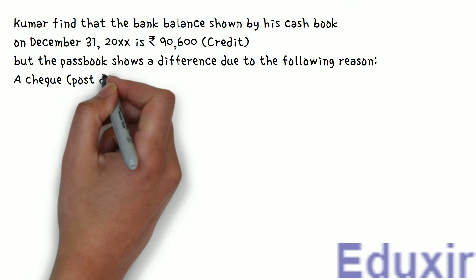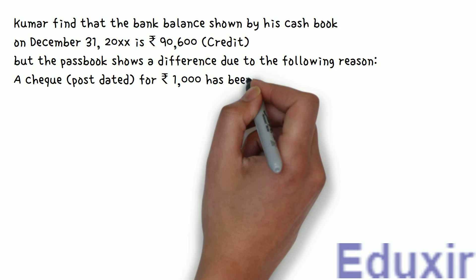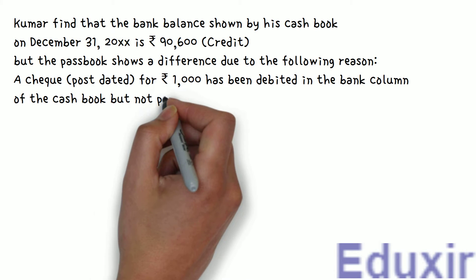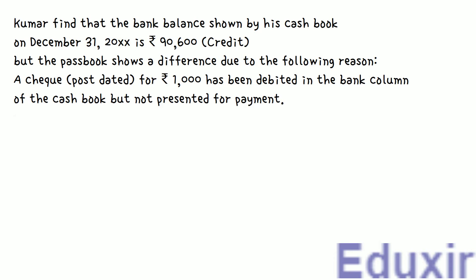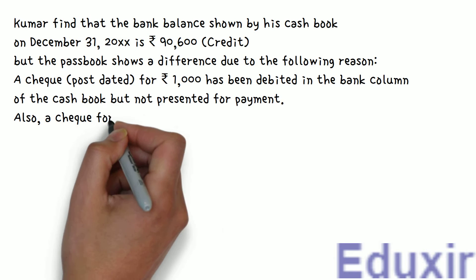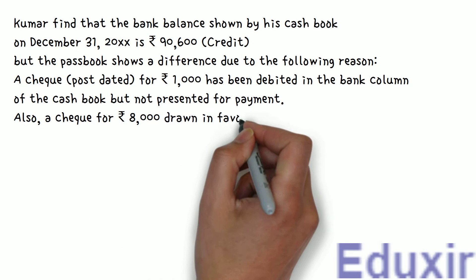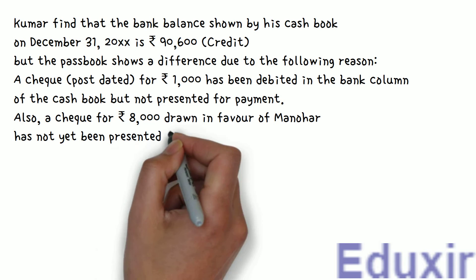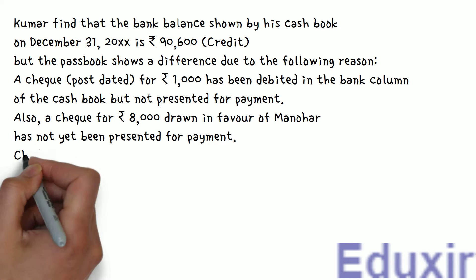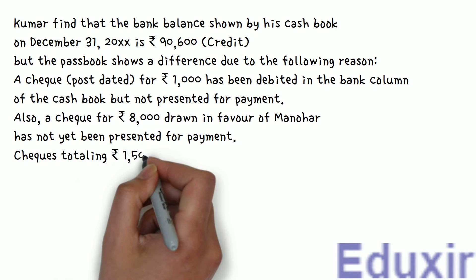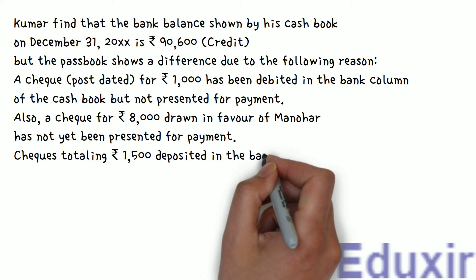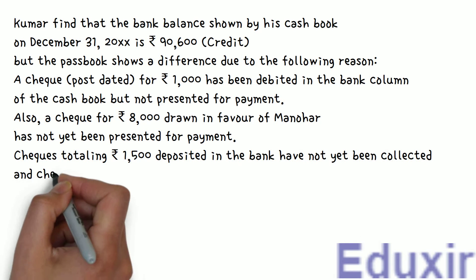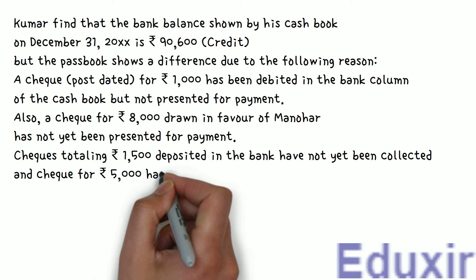A postdated check for Rs. 1,000 has been debited in the bank column of the cashbook but not presented for payment. Also, a check for Rs. 8,000 drawn in favor of Manohar has not yet been presented for payment. Checks totalling Rs. 1,500 deposited in the bank have not yet been collected. And a check for Rs. 5,000 has been dishonored.